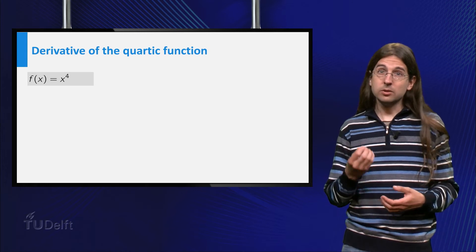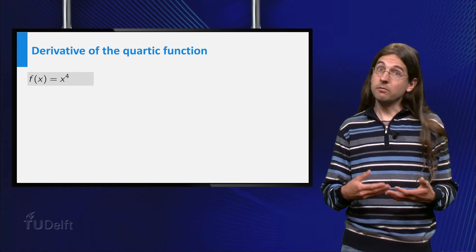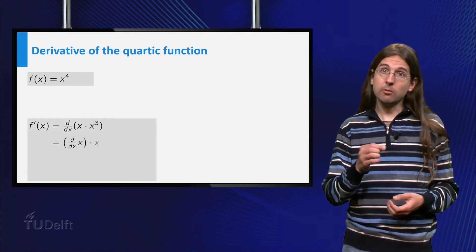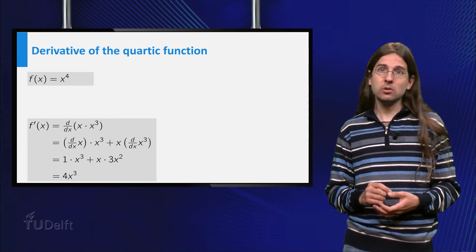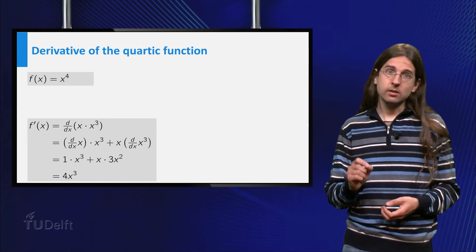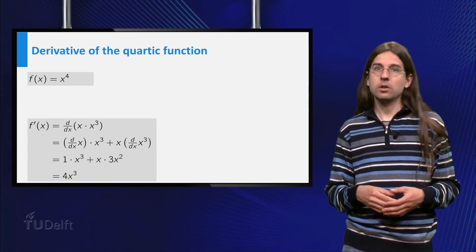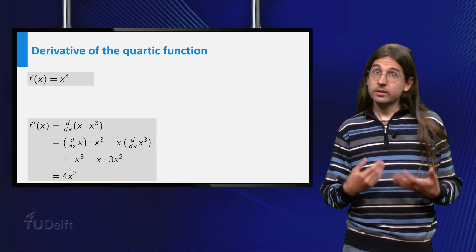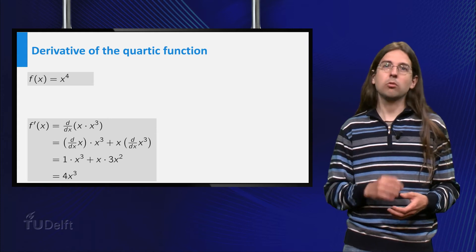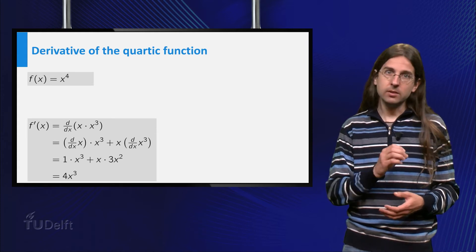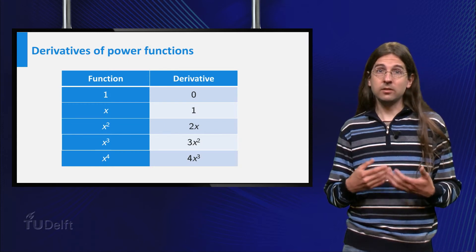Again we use the product rule to find the derivative instead of using the definition directly. We can write x to the power 4 equals x times x to the power 3 and obtain that the derivative of x to the power 4 equals 1 times x cubed plus x times 3x squared, which is 4x cubed. Thus we can calculate the derivative of x to the power 4 using the fact that we already know the derivative of x to the power 3. Plugging this in the table, the pattern is now obvious.